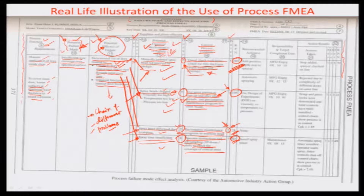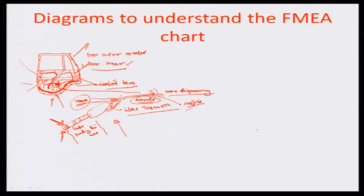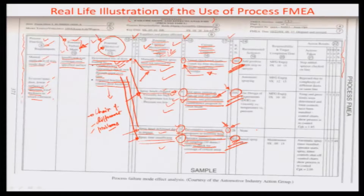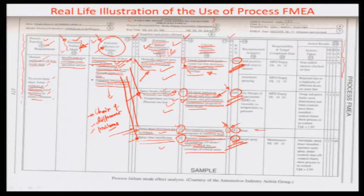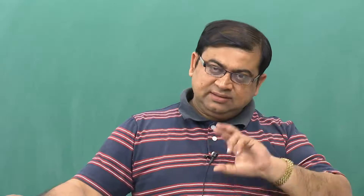We can identify causes 1, 2, and 4 as needing action and leave cause 3 untouched since its RPN of 28 is low. The spray head deformed due to impact does not happen very severely or frequently, so it can be left for now. We address only the three causes with significant RPNs — 280, 105, and 392 — corresponding to manually inserted spray head, spray heads clogged, and spray time insufficient.